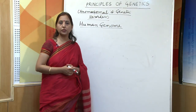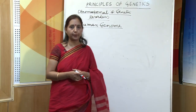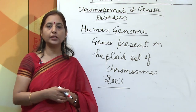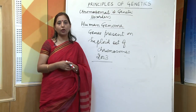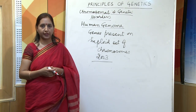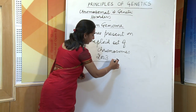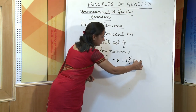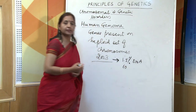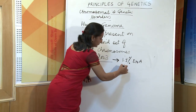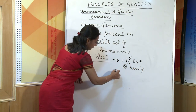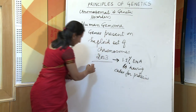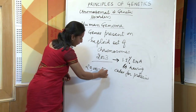The next topic is the human genome. Genome is the set of genes present on the haploid set of chromosomes. In 2003, the Human Genome Project was completed. All 25,000 genes have been identified, and we are looking forward to solutions to defects caused by defective genes. An important finding is that only 1.5% of DNA codes for proteins or carries information for characters. The total number of genes has been identified as 20,000 to 25,000.